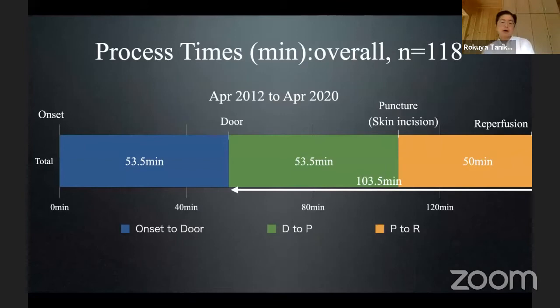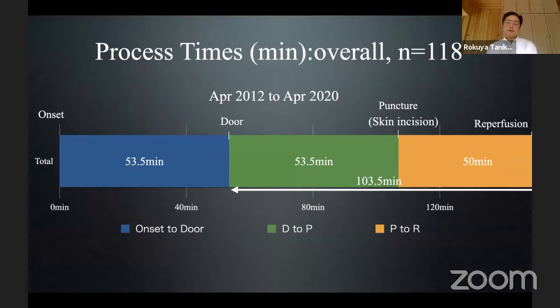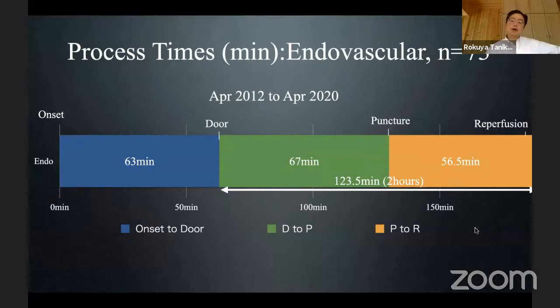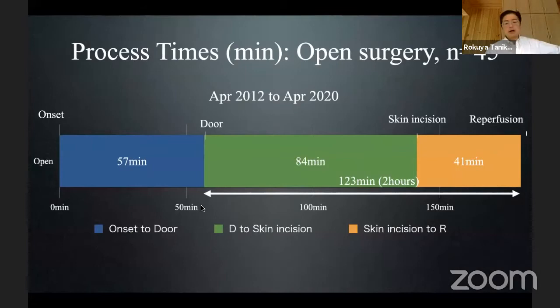Overall process time for 118 cases: patients come within one hour from onset. Door to puncture or door to skin incision for surgery was 53 minutes. Skin incision to reperfusion for surgery was 41 minutes — faster than endovascular. Door to puncture for endovascular was 67 minutes — we should shorten this to less than 60 minutes. Puncture to reperfusion for endovascular was within one hour. Total time for surgery is about 2 hours; for endovascular as well about 2 hours — similar.